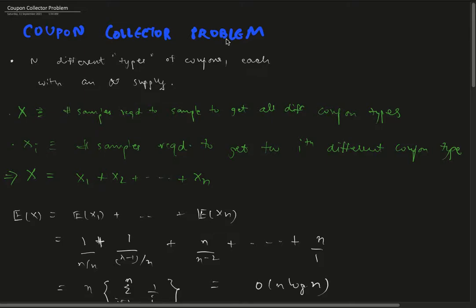We define X as the number of samples required to sample all different types of coupons. X_i is defined as the number of samples required to get the ith different coupon type.